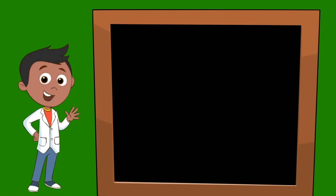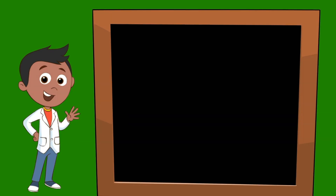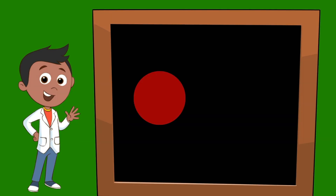Today we'll be learning how to count with ten sticks. Let's start with our red dot. The red dots are going to represent our ones. Each dot counts for one.